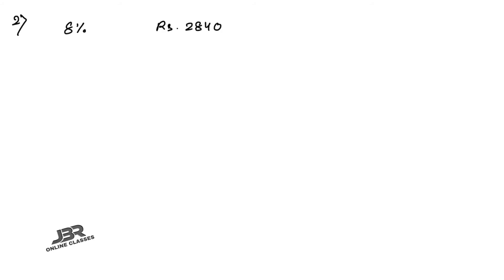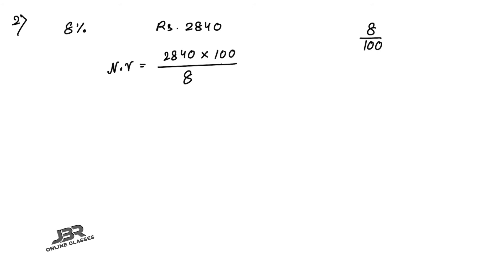Sum number two: a company declares an 8 percent dividend. If a man receives rupees 2840 as his dividend, find the nominal value. The formula gives 2840 divided by 8 percent, that is 2840 multiplied by 100 divided by 8, which equals rupees 35,500. So the nominal value of the shares is rupees 35,500.